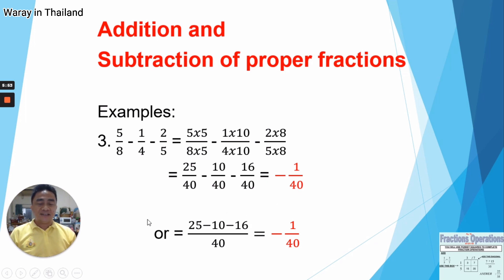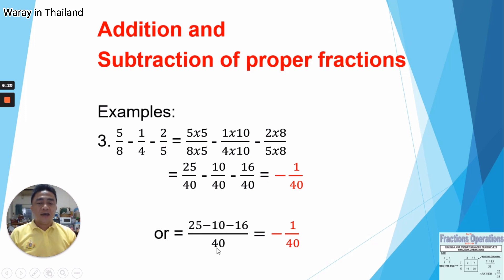You can also do that in this alternative way. You take the least common multiple, which is 40. Then you just divide: 40 divided by 8 gives you 5, then multiply it by the numerator — 5 times 5 is 25. Or, 40 divided by 4 is 10, and we multiply it by 1, it gives you 10. And the last one, 40 divided by 5 gives you 8, times 2 gives you 16. So it's the same as before — you will get also the same answer, that is negative 1 over 40.